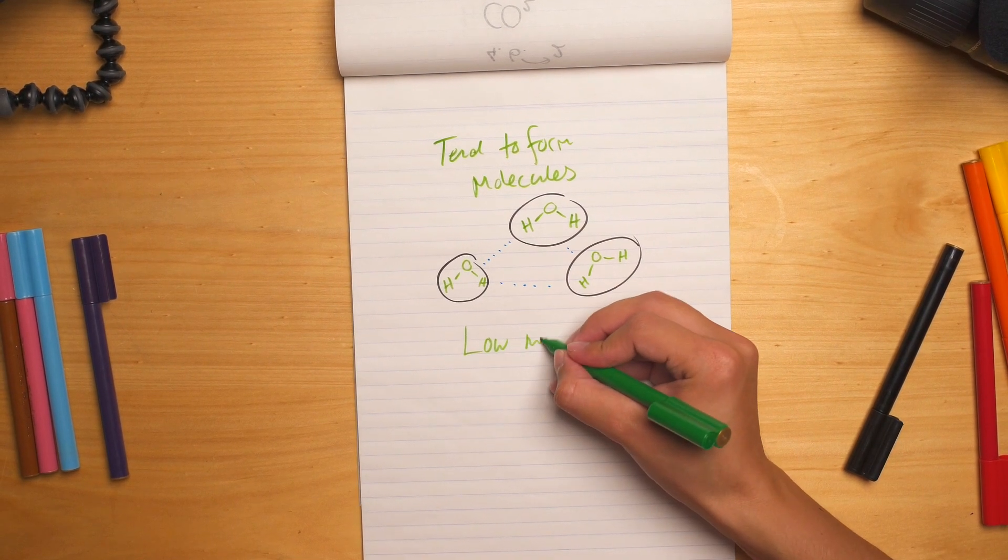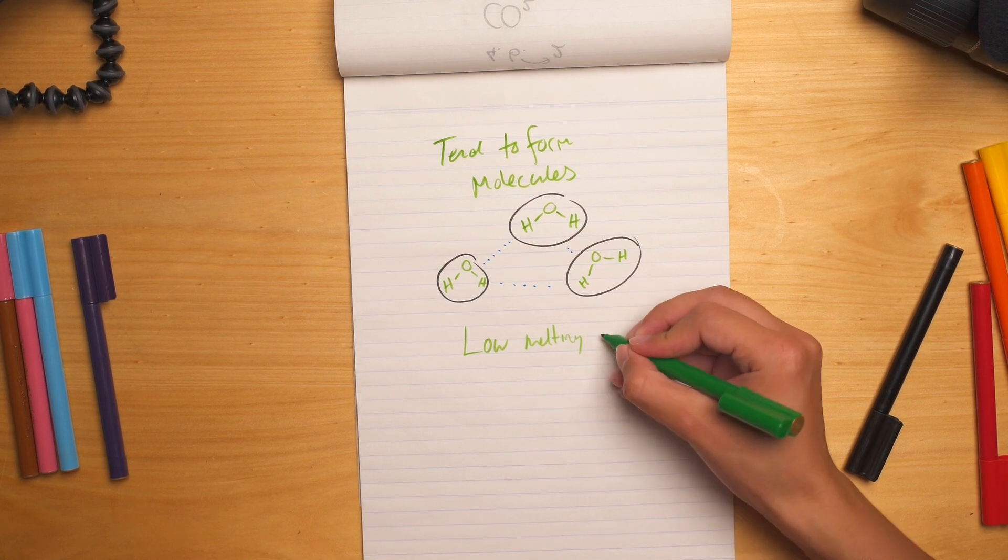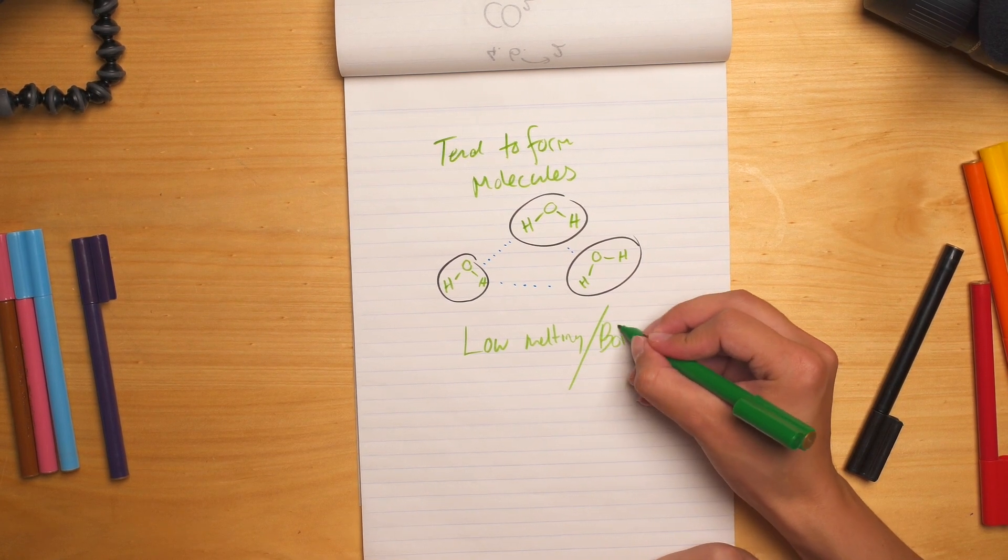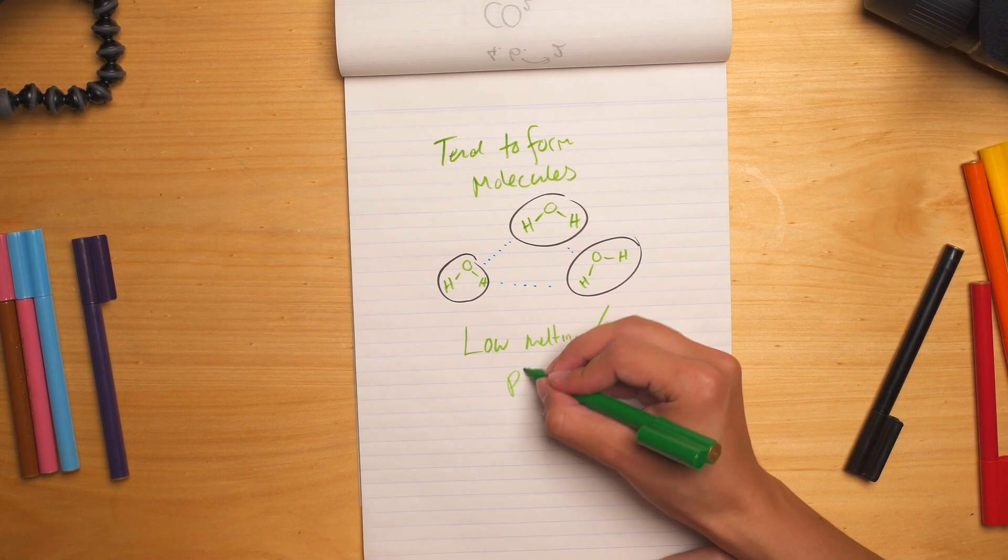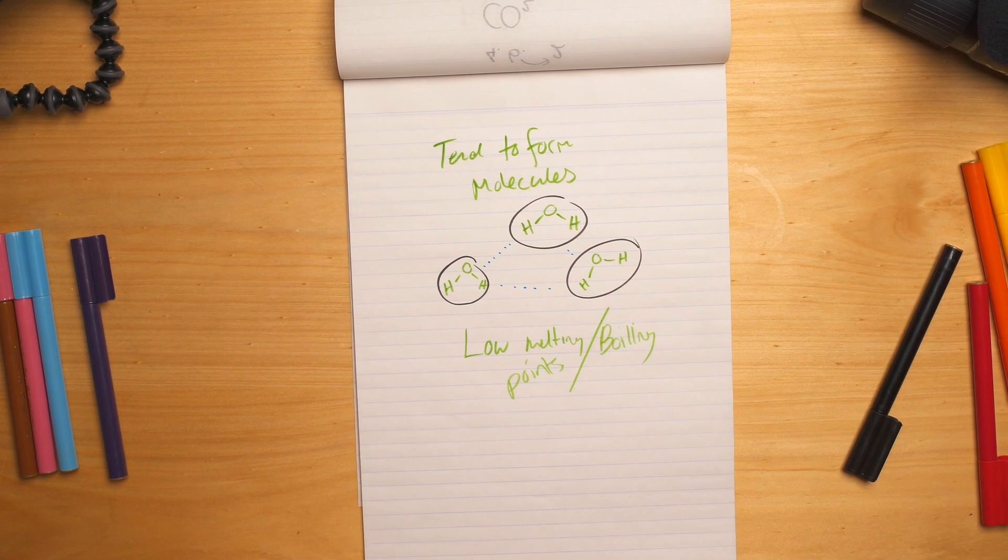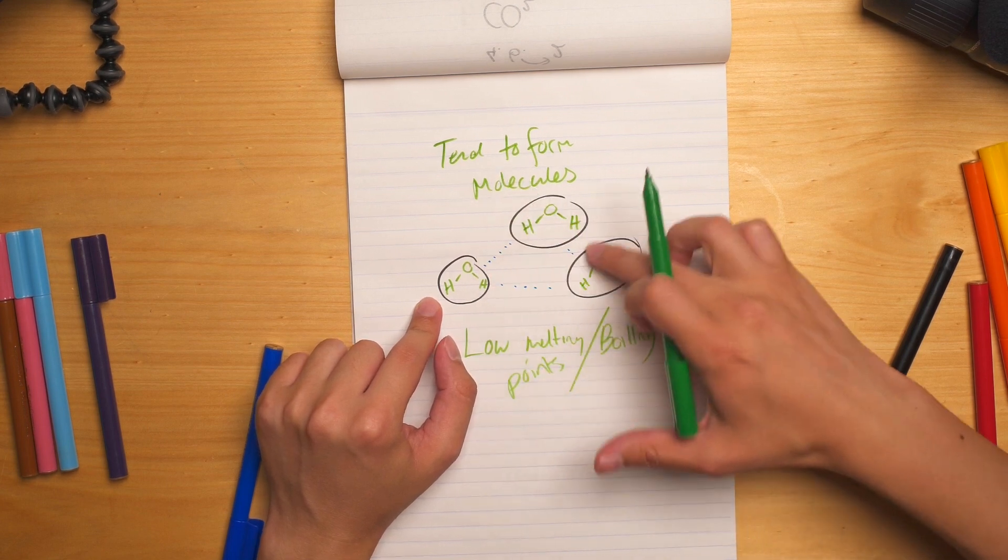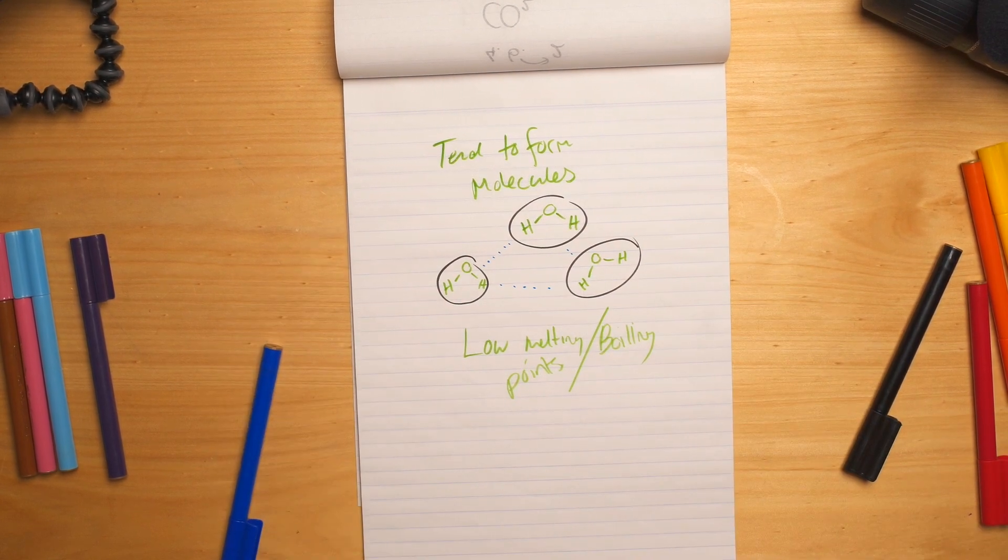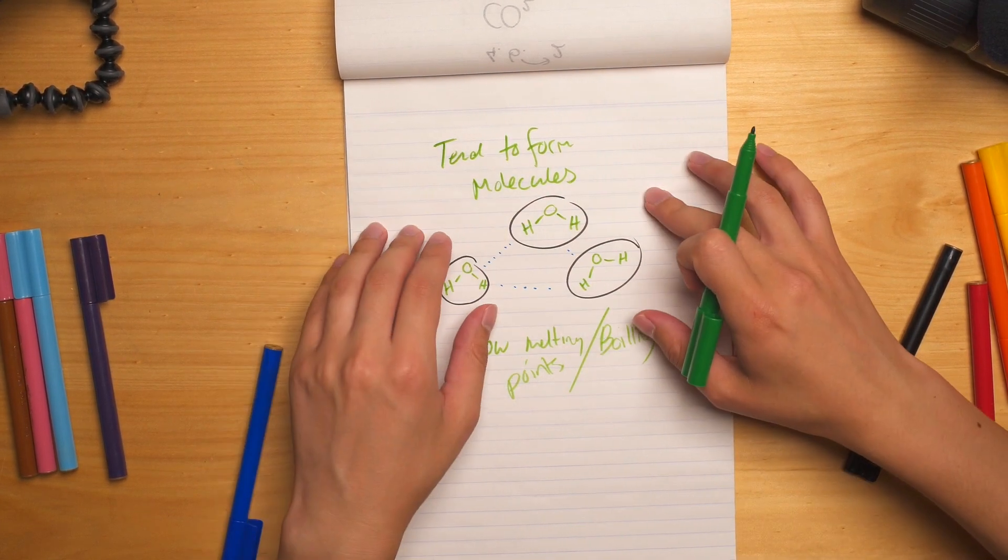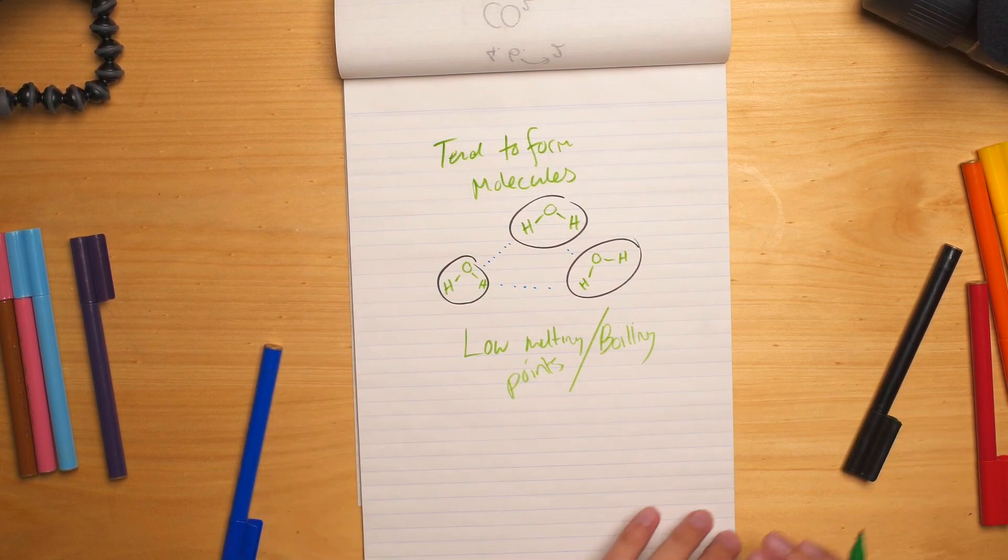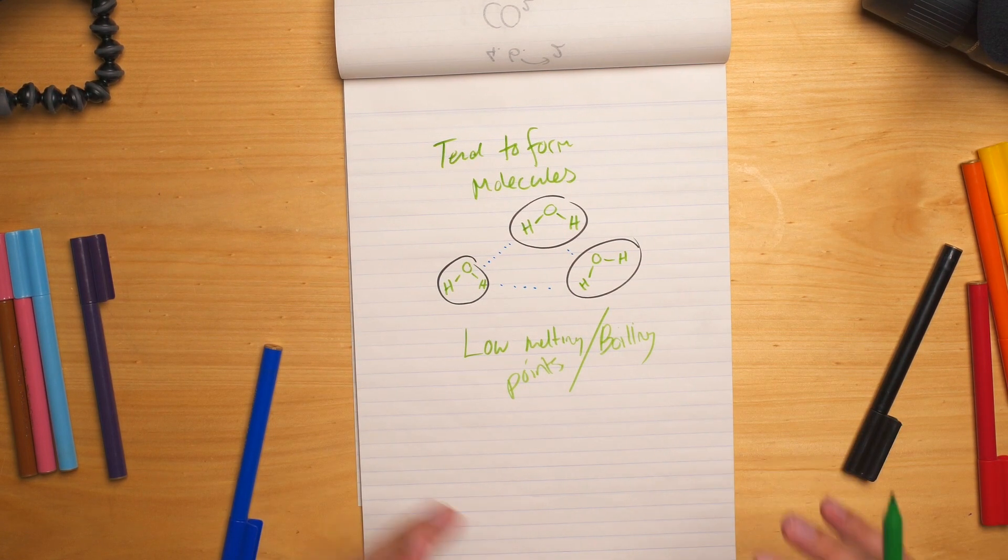So we've got low melting or boiling points. They also tend to be relatively soft. So again, this comes to the nature of the molecules having very weak attraction between each other. So if this was in a network here, it would be relatively easy to push them around. So they will be relatively soft.